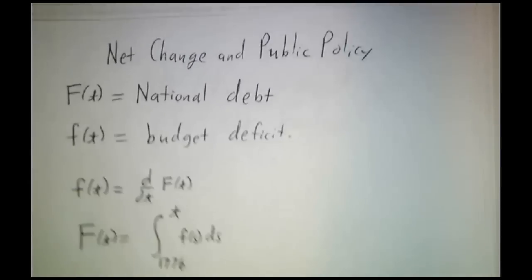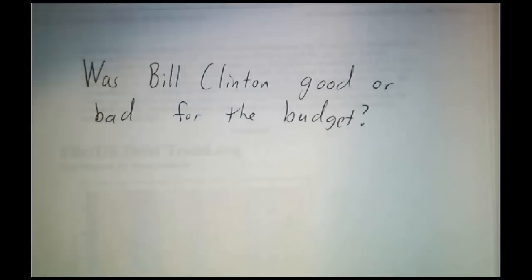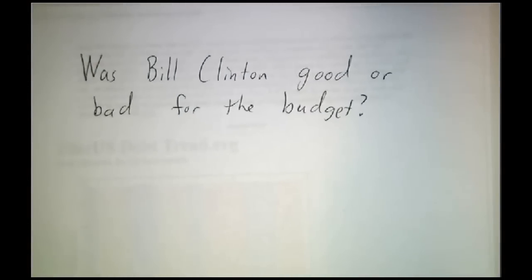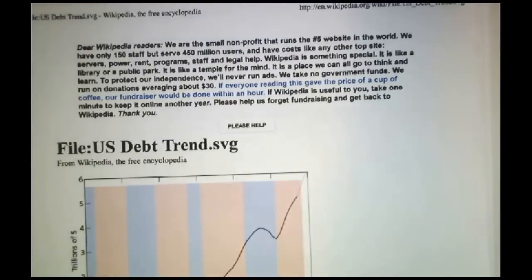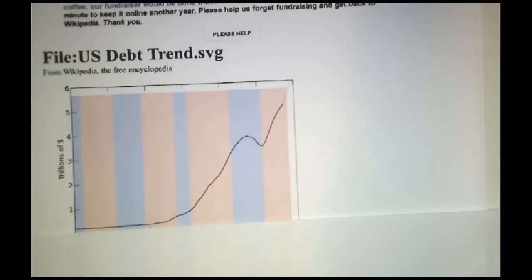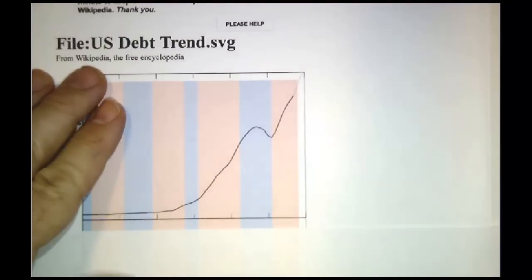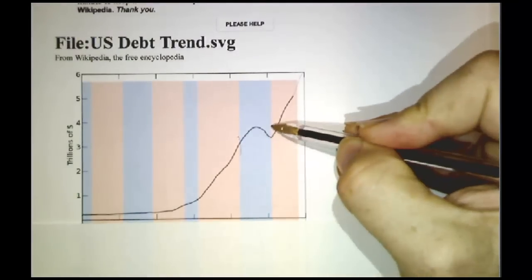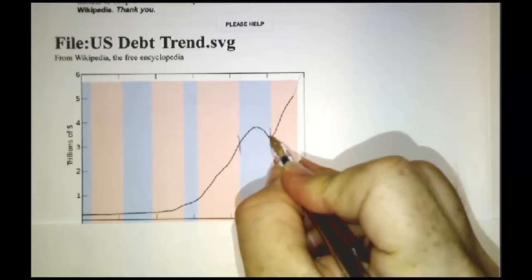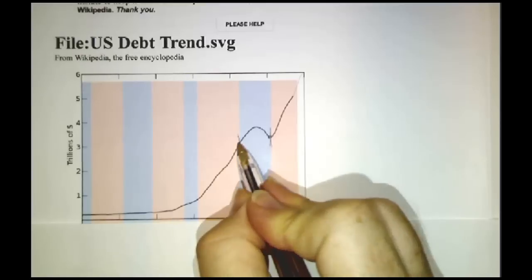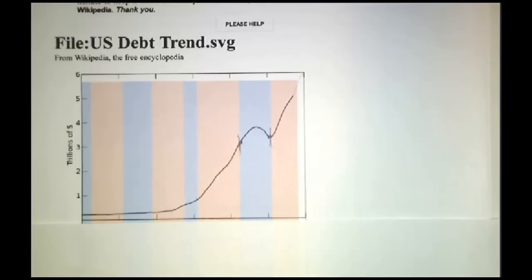So with that in mind, was Bill Clinton a good or bad president when it came to the budget? You'll hear different arguments depending on whether you're listening to Democrats or Republicans. We'll give the Republicans the first word here. This is a graph of the national debt as a function of time. This blue strip here is the Clinton presidency, and you'll notice that the debt at the end of his presidency was higher than the debt at the beginning.